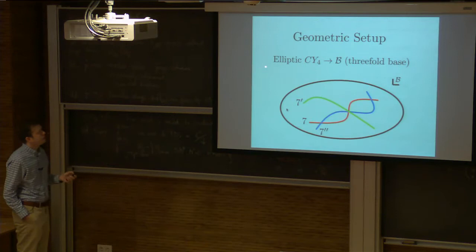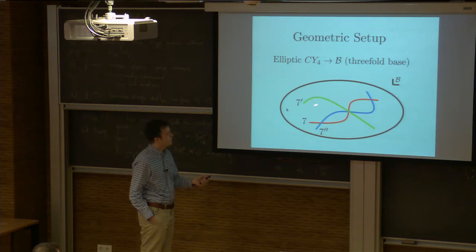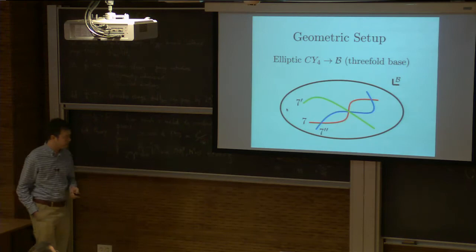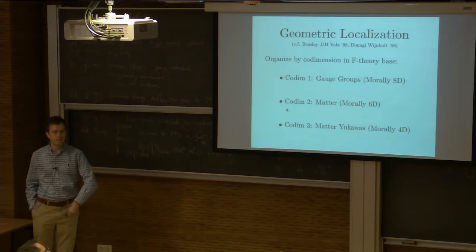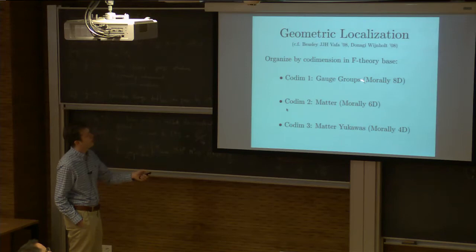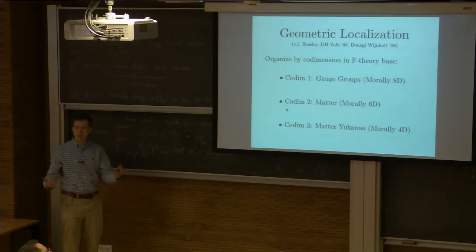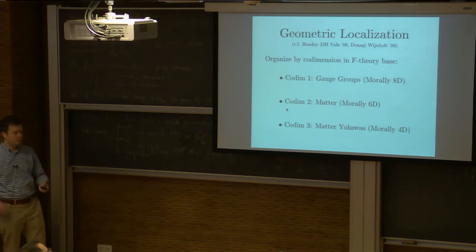I'm considering F-theory in four dimensions — taking elliptically-fibered Calabi-Yau fourfolds over some complex threefold base. These are components of the discriminant locus where I have some seven-branes. They can intersect in various ways — pairwise intersections or triple intersections. I want to analyze what kind of four-dimensional theories I get from these kinds of intersections. Organizing by codimension: morally we have an 8D gauge theory on the seven-branes; pairwise intersections are associated with six-dimensional phenomena giving us matter; and triple intersections give us some kind of Yukawa coupling.